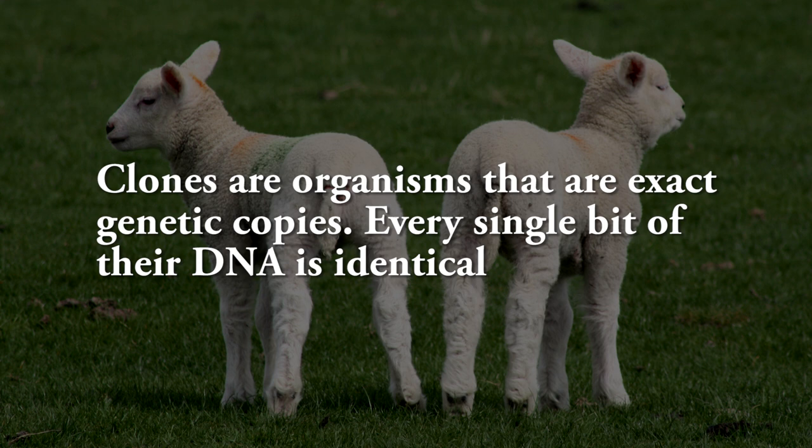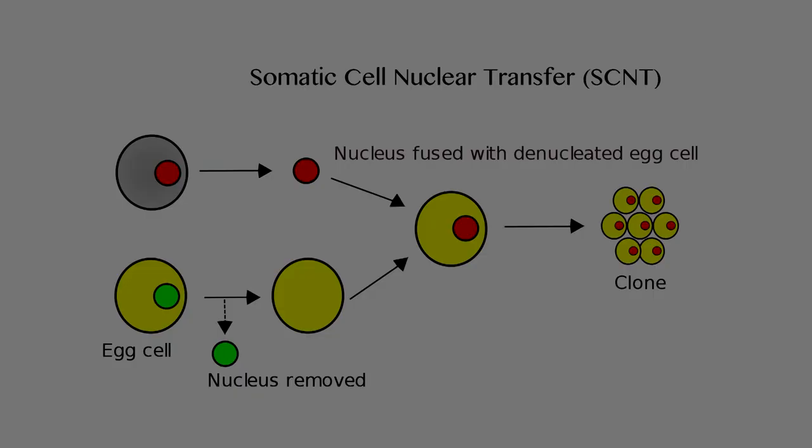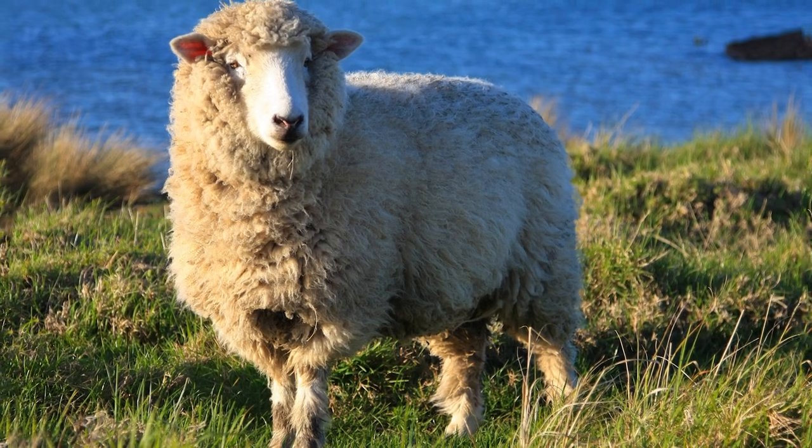How is cloning done? Somatic Cell Nuclear Transfer, called SCNT, is the process. It is also called nuclear transfer and uses a different approach than artificial embryo twinning, but it produces the same result: an exact genetic copy, or clone, of an individual. This was the method used to create Dolly the sheep.